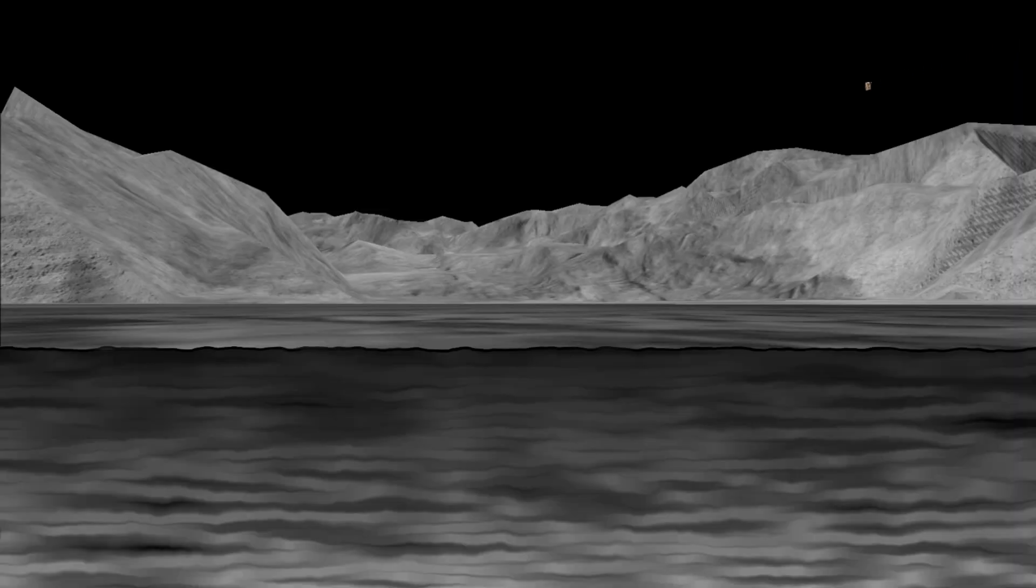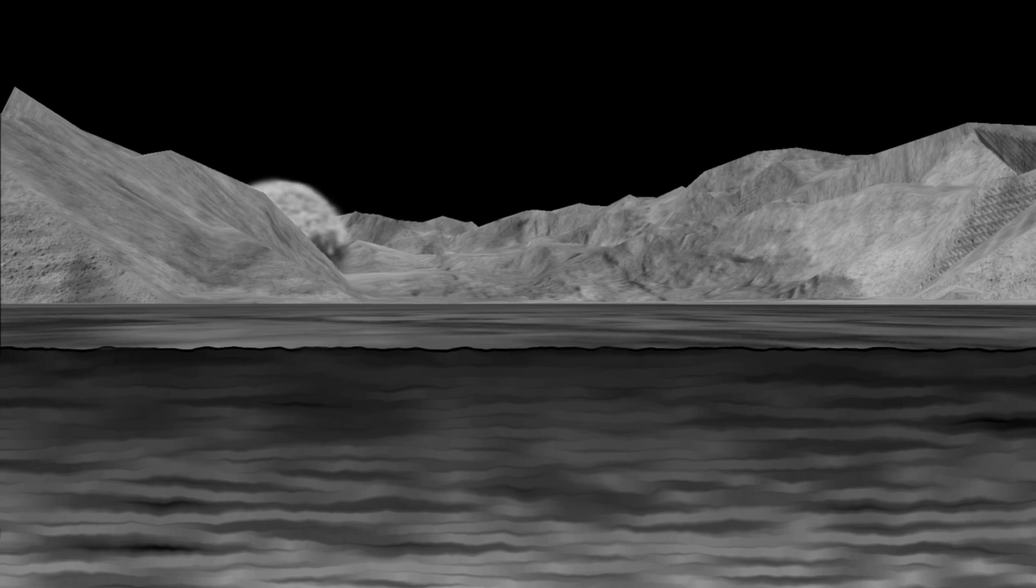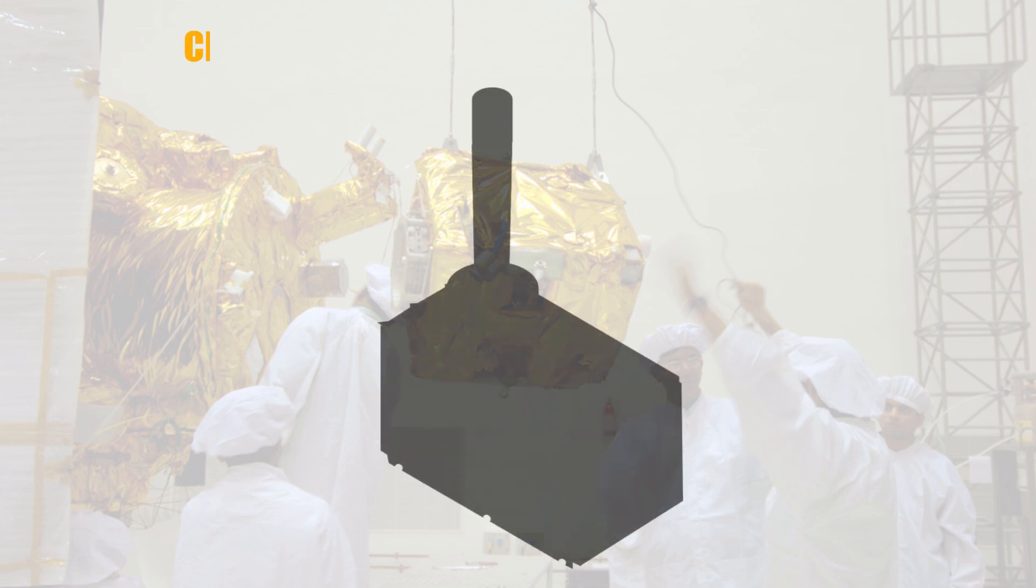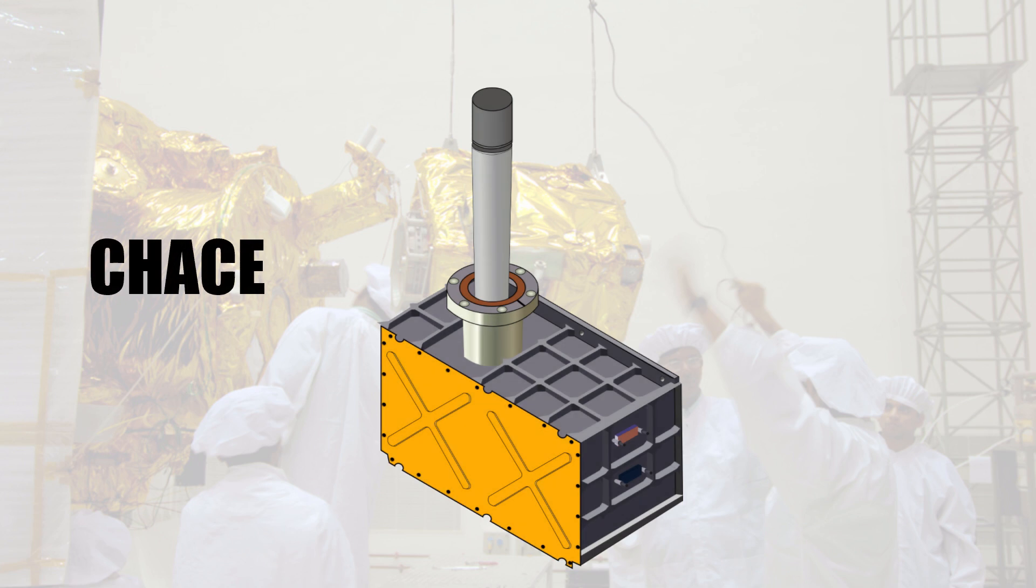Considering the fact that the moon has an extremely thin atmosphere, in conjunction with a limited time of less than 25 minutes to collect data, the instrument that collected this data did an extremely good job. This instrument was the Chandra's Altitudinal Composition Explorer, or CHACE for short.